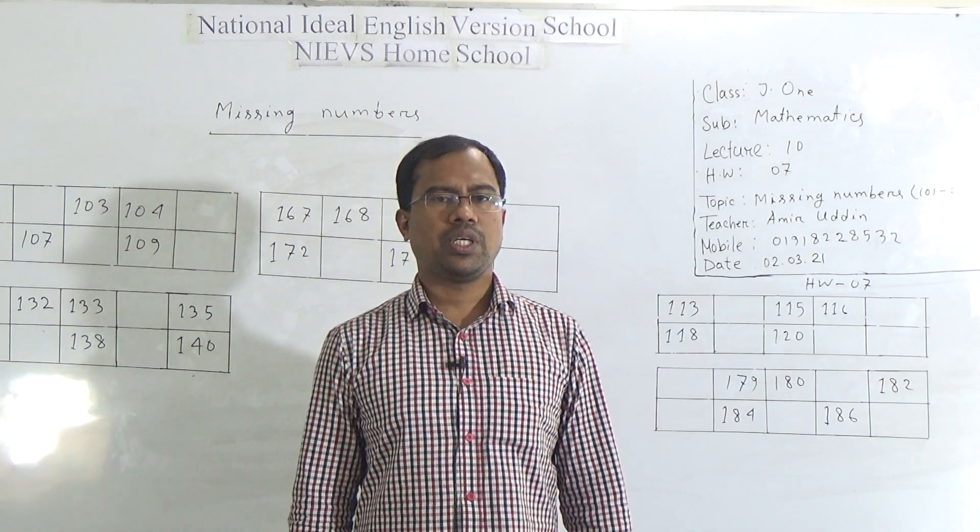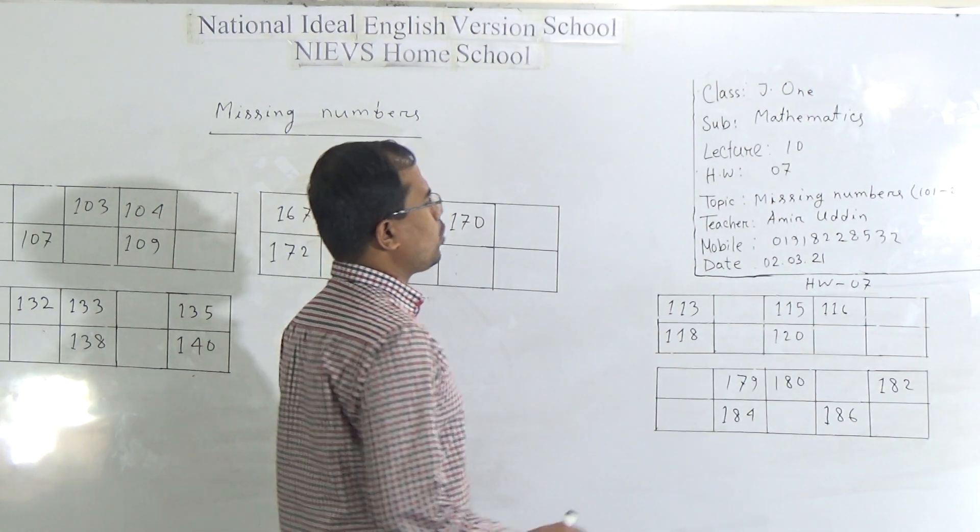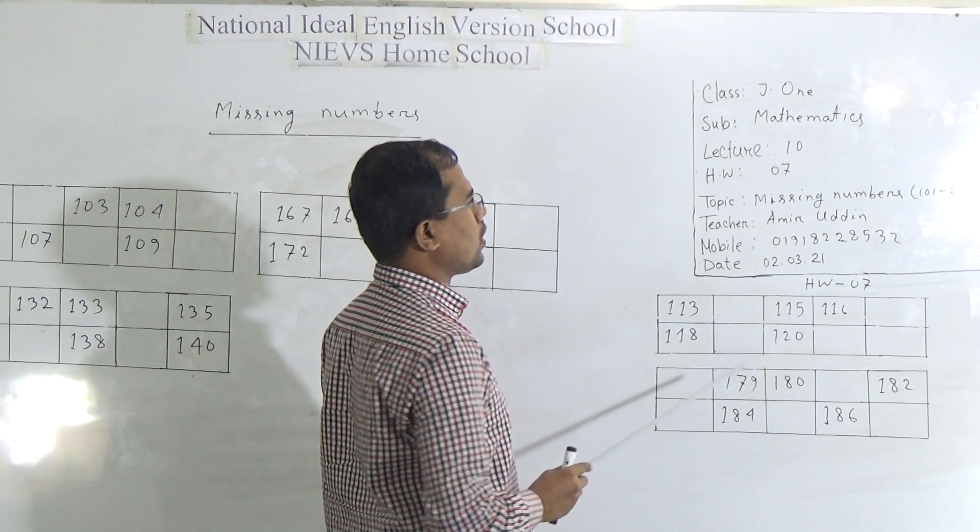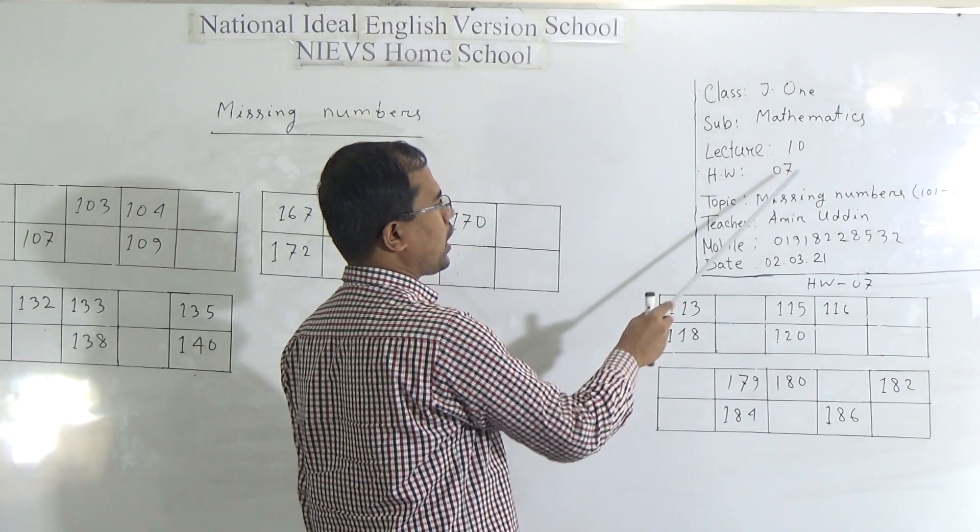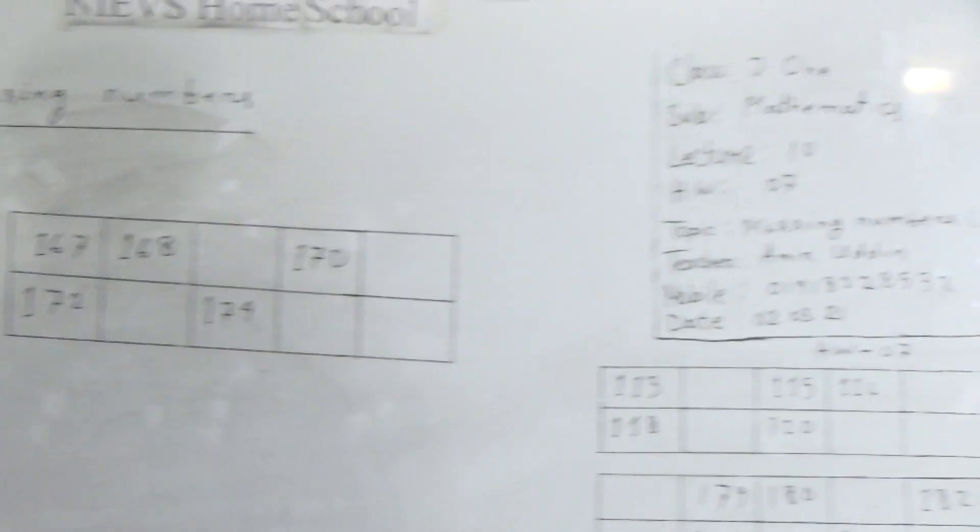Dear students, today I am going to take a math class for the students of junior 1. On today's topic, missing numbers 101 to 200. This is lecture number 10 and HWO number 7. Dear students, now let us start our today's class.